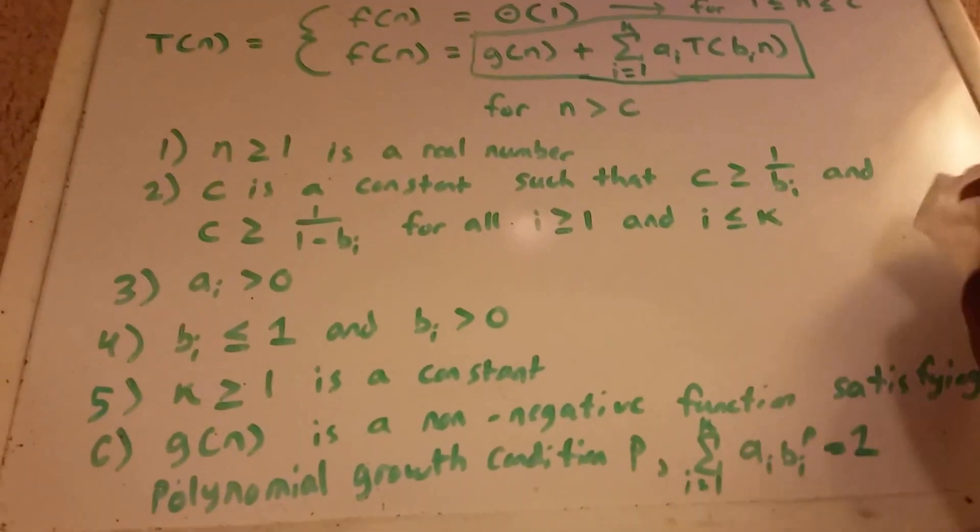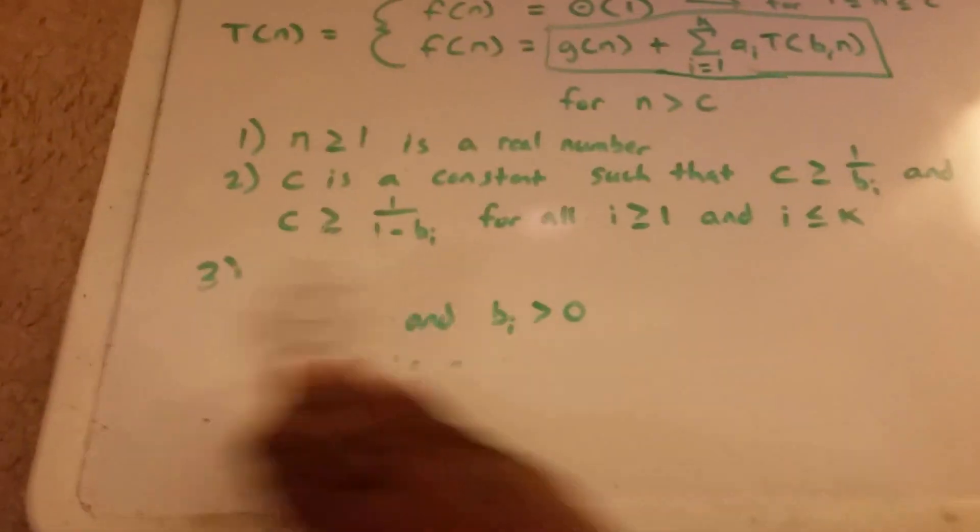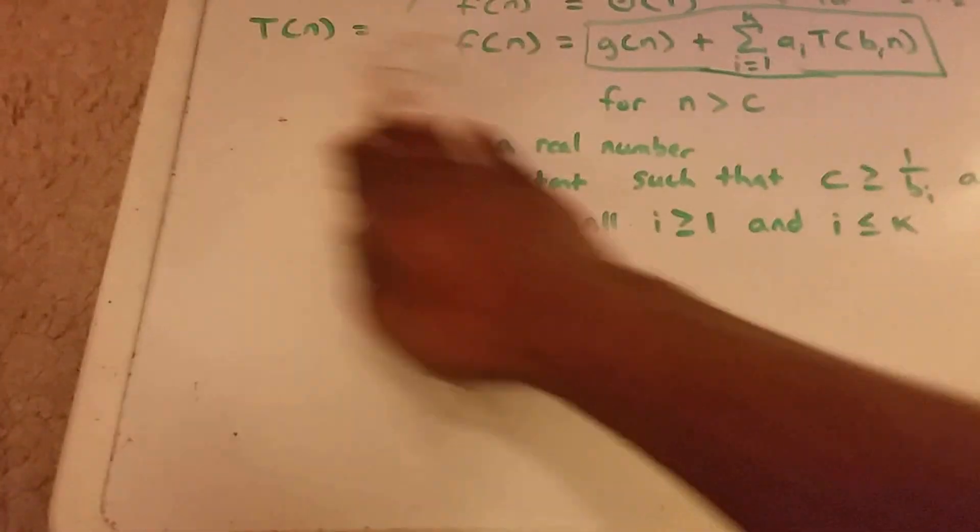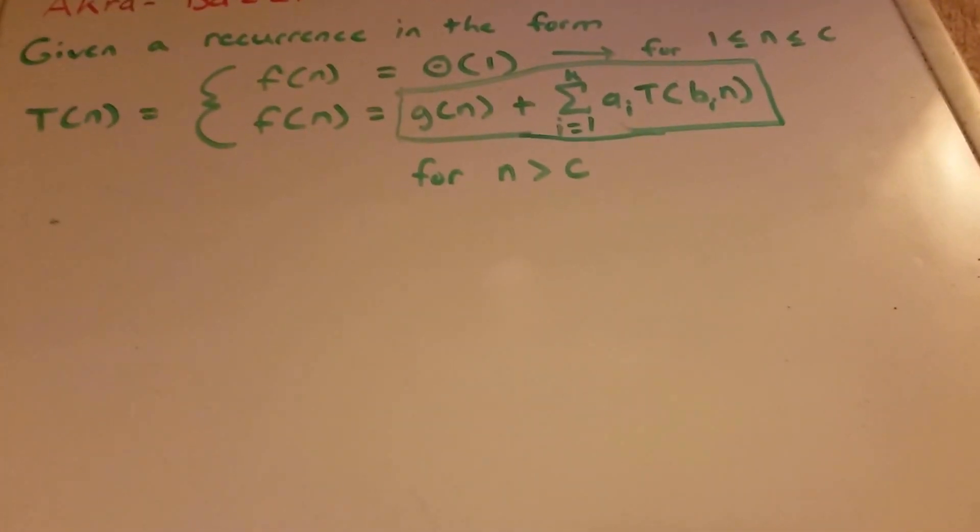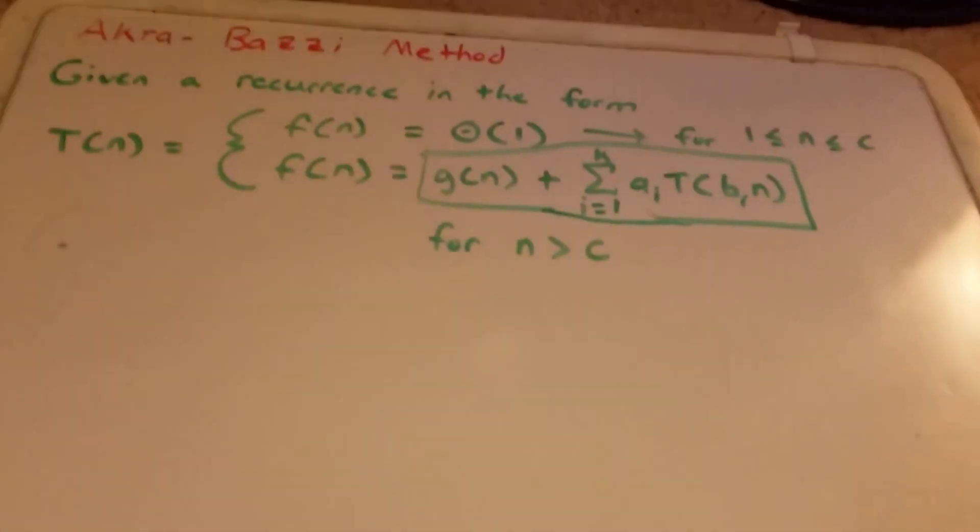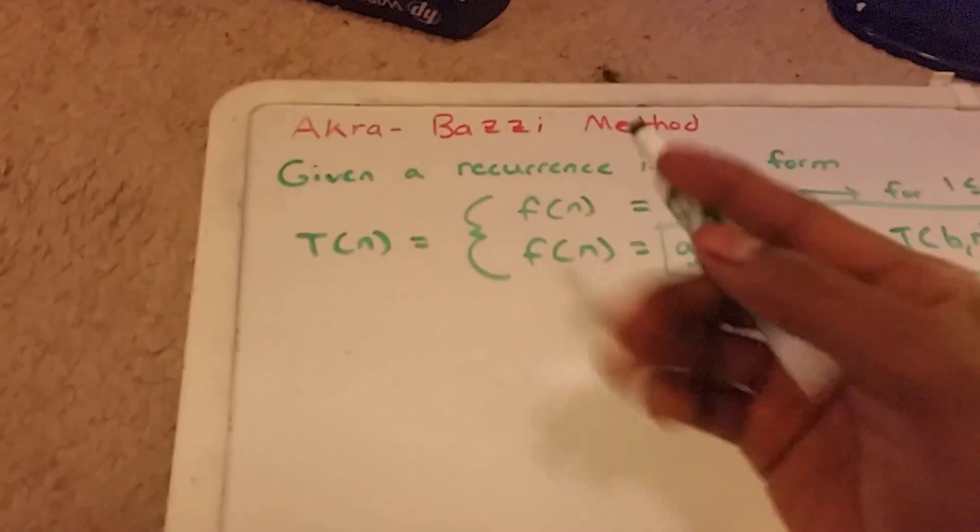So I'm going to go ahead and erase this here. That's their conditions. And now what we're going to do is write down the actual method that they can use to solve this recurrence.